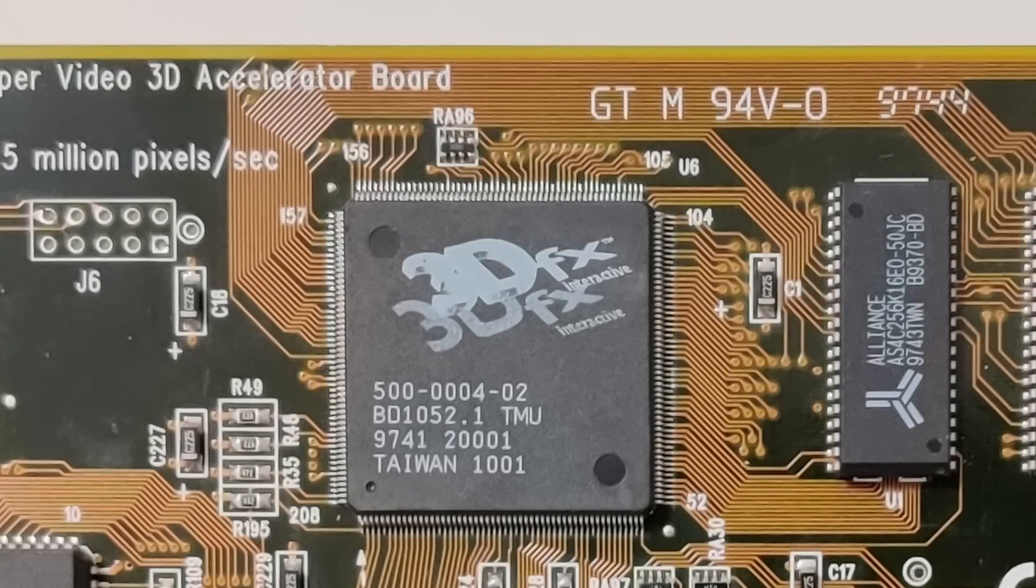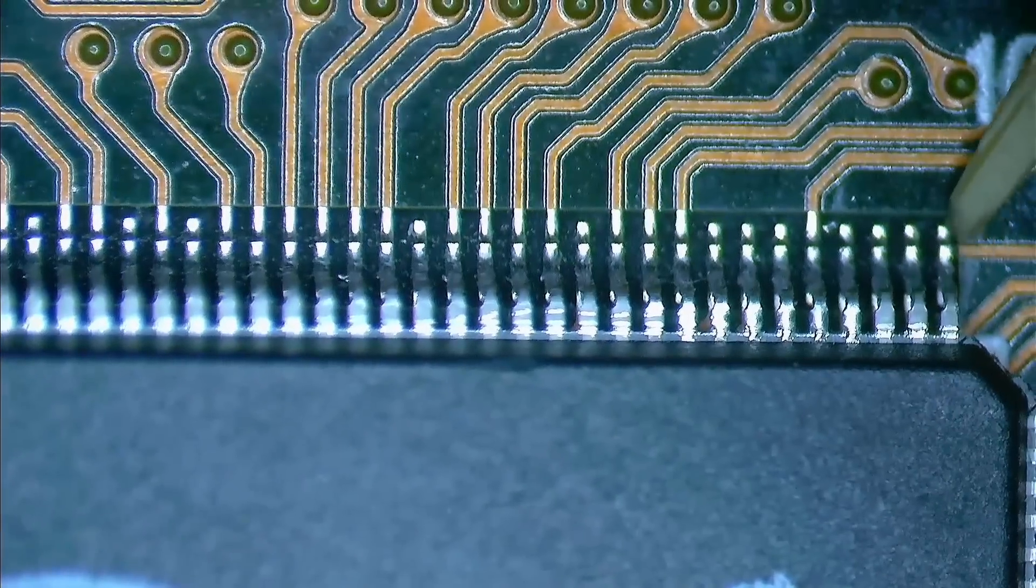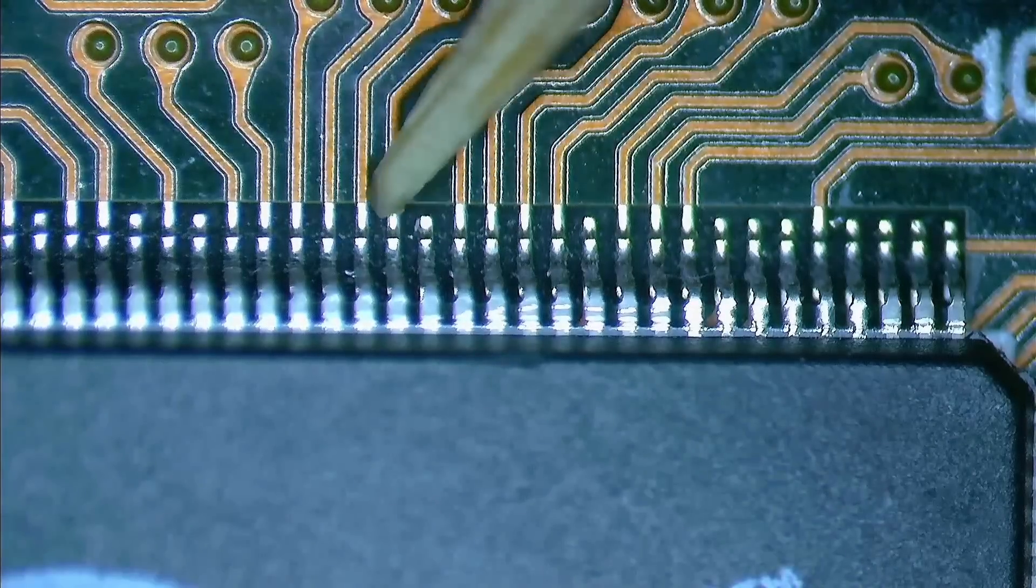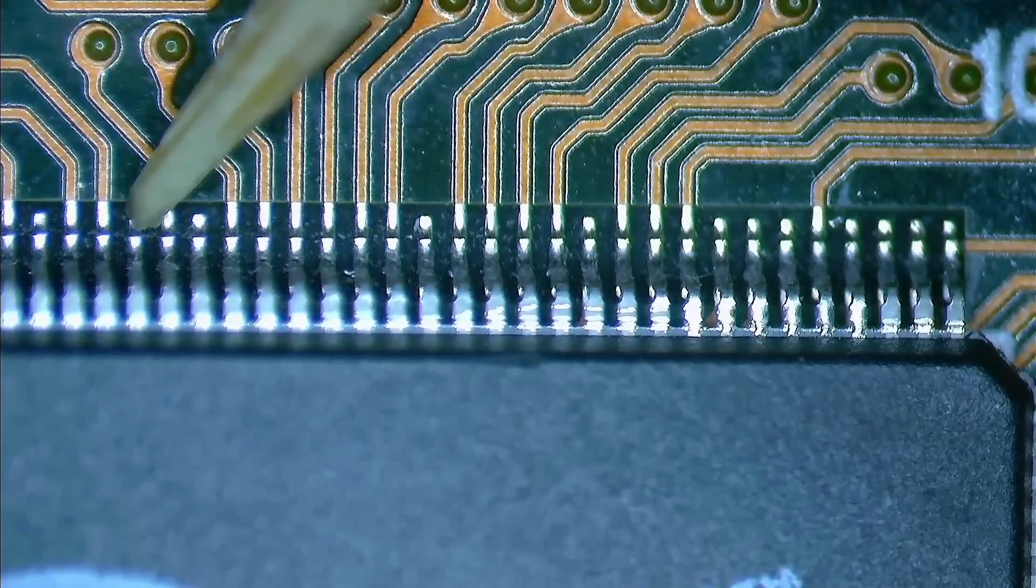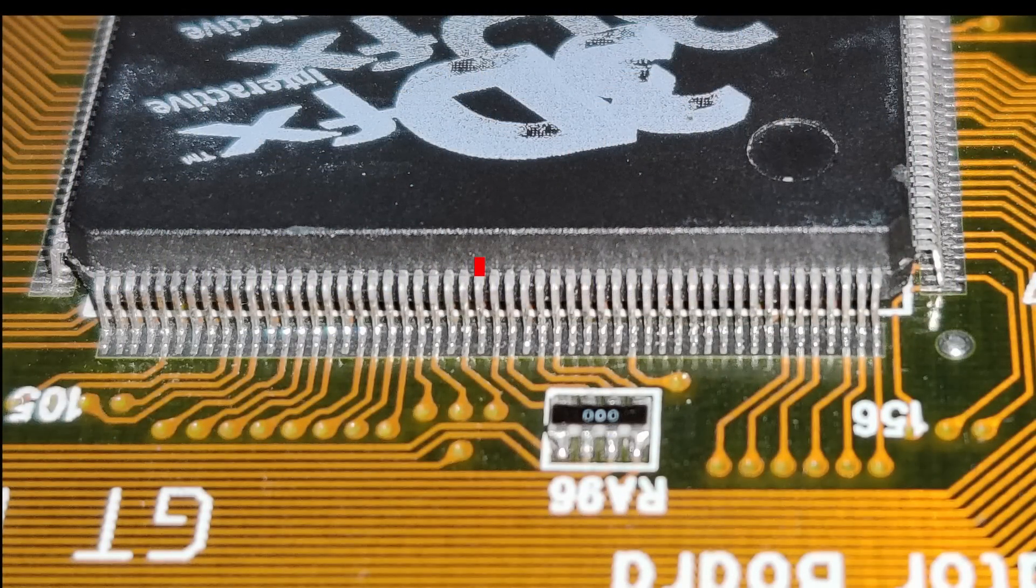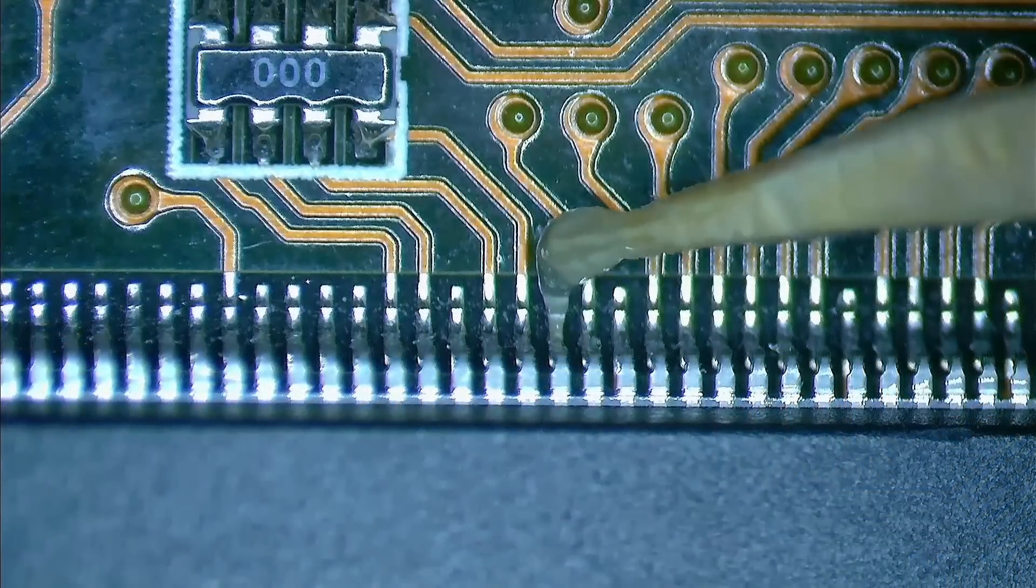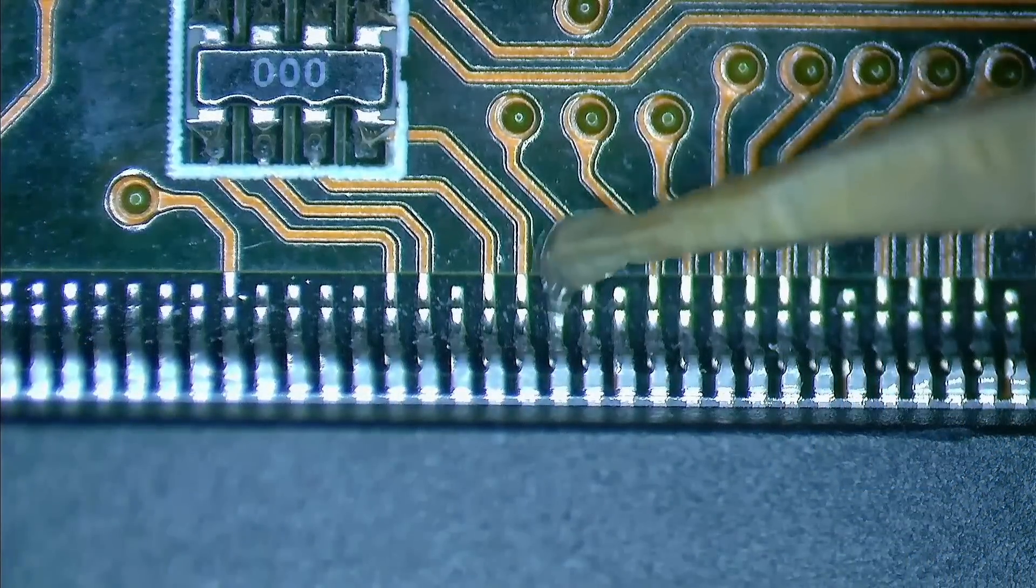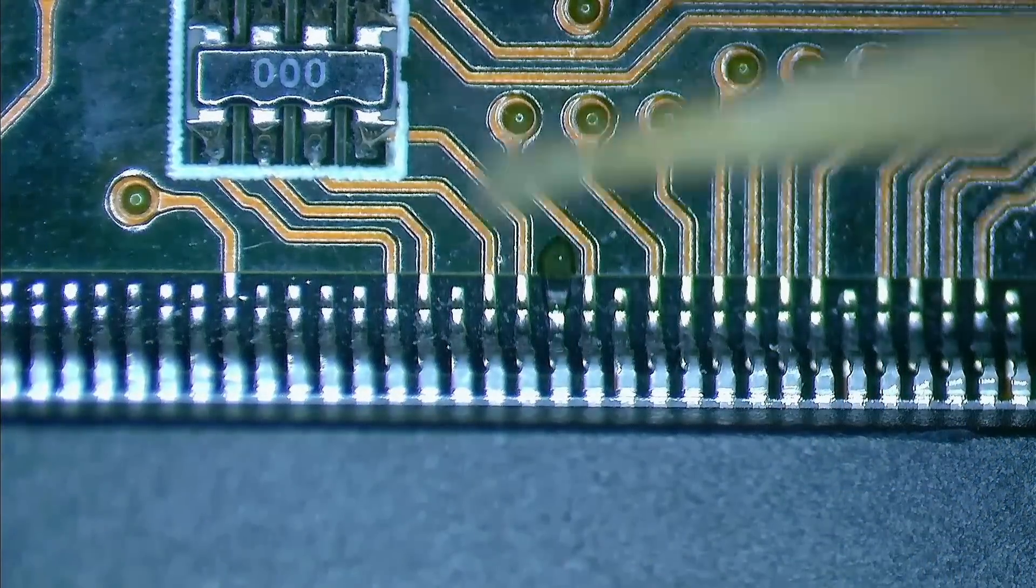The TMU mod requires one wire to be attached to pin 130 of the TMU chip. On one corner of the TMU chip should be the number 105 printed to the board. This is pin 105, so we just have to count 25 pins on the same row away from this pin. And there is pin 130. Here is a better view of the pin. You can see that it is not connected to anything at this moment. Well, we are going to change that now.